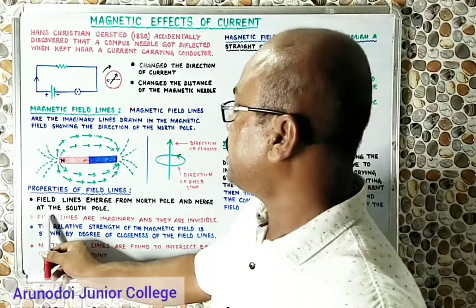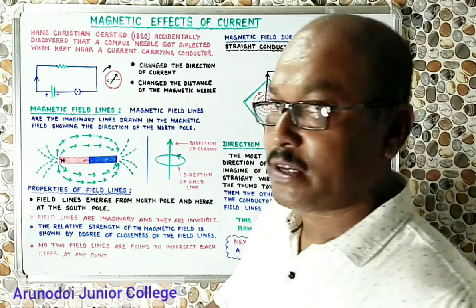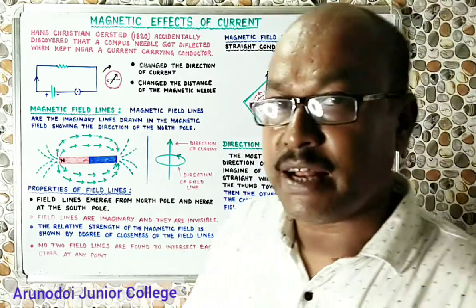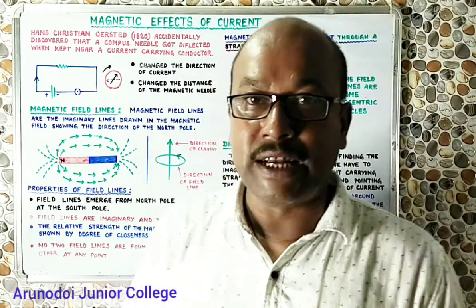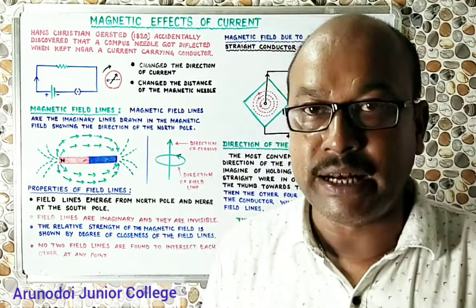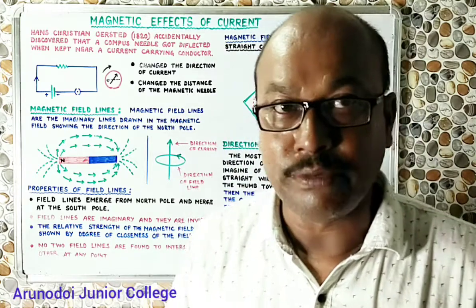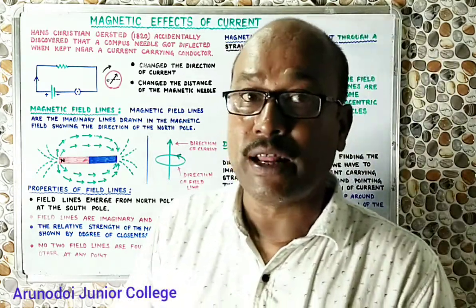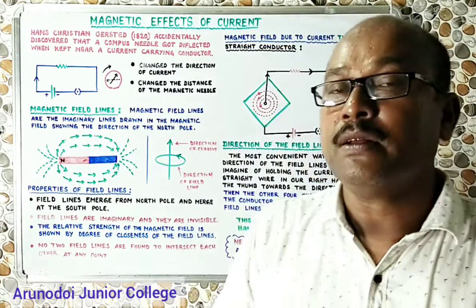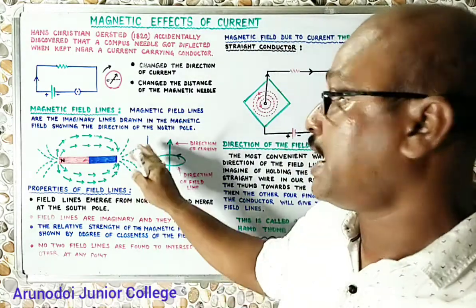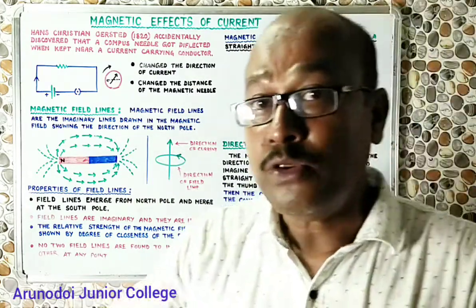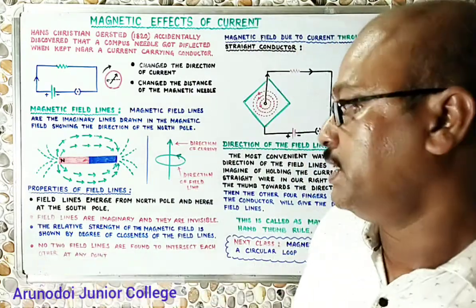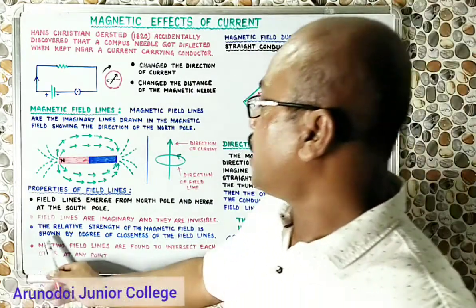The second property is that magnetic field lines are imaginary lines. They are not actually present around the magnet within the magnetic field. They are imaginary lines drawn to understand the movement or direction of the North Pole within the magnetic field.